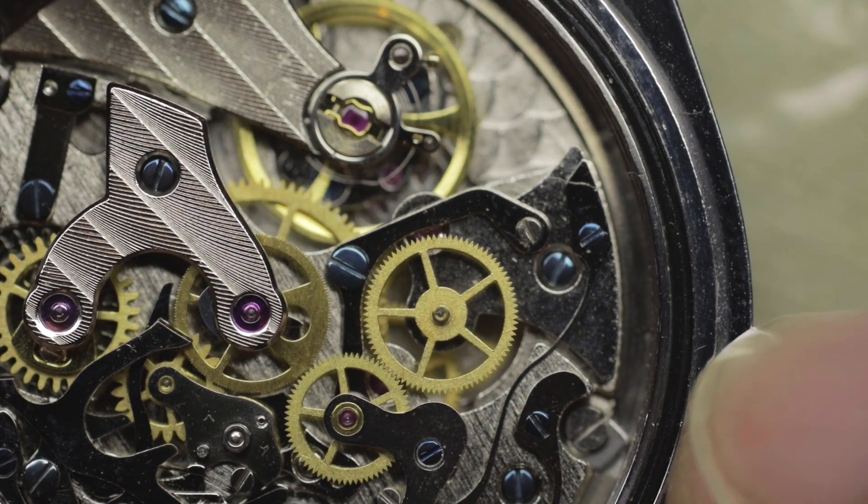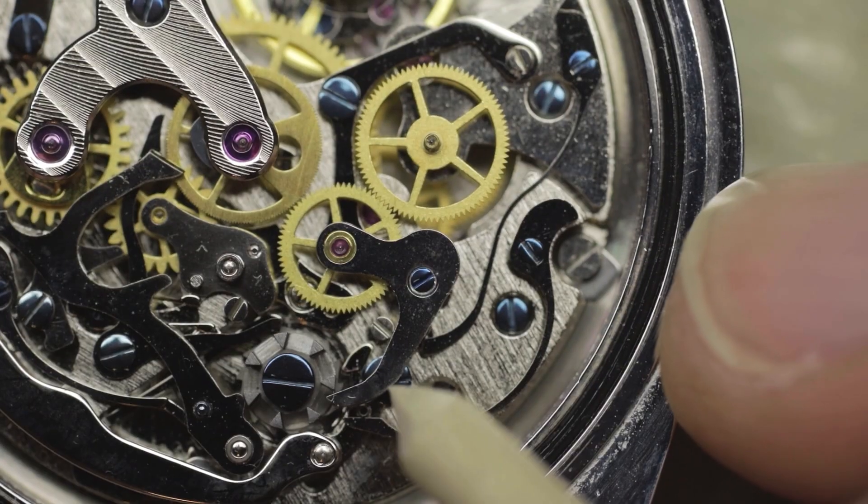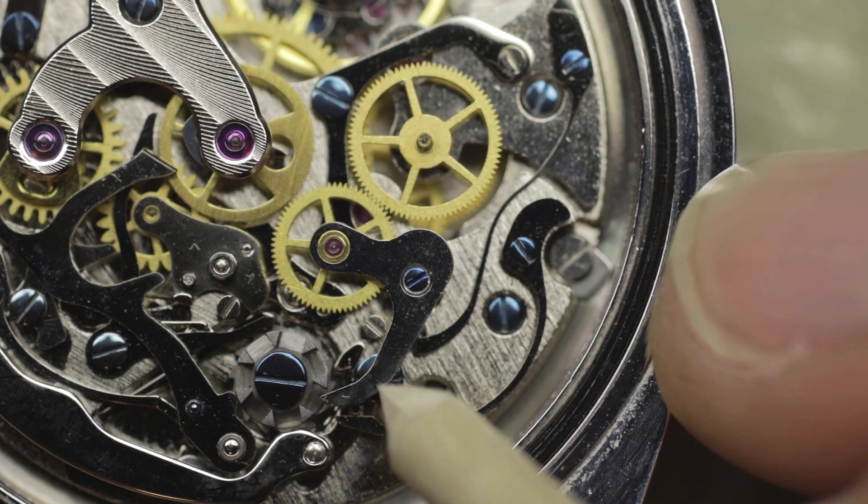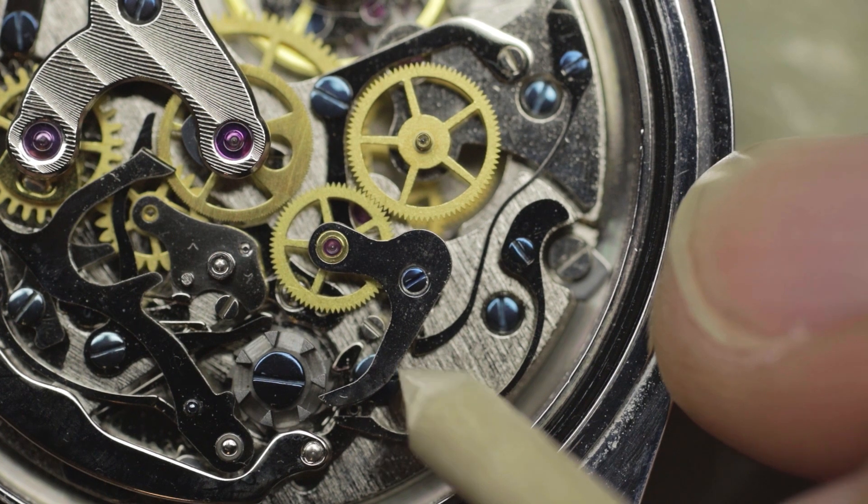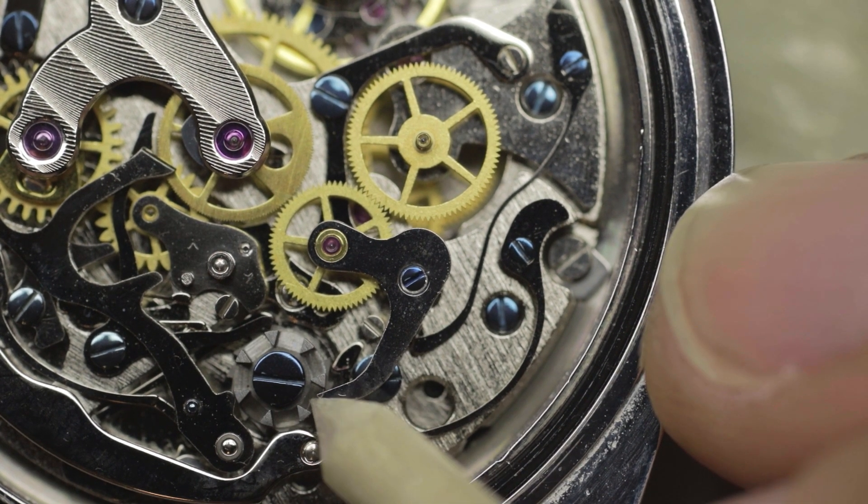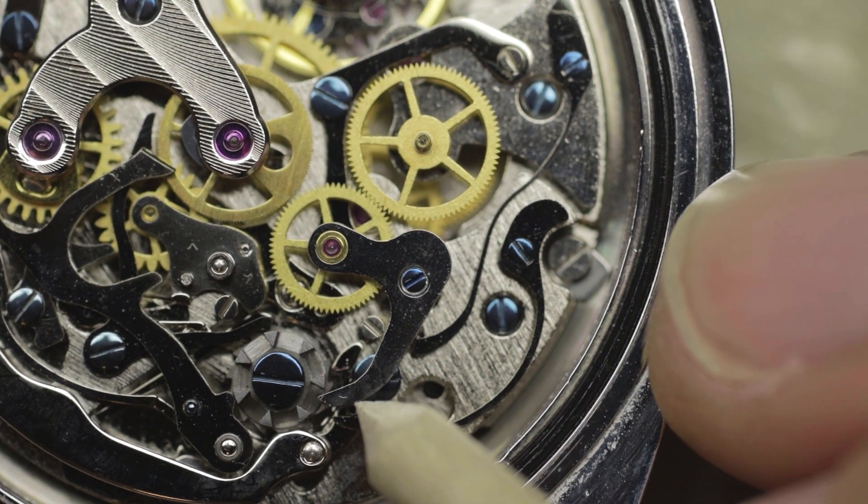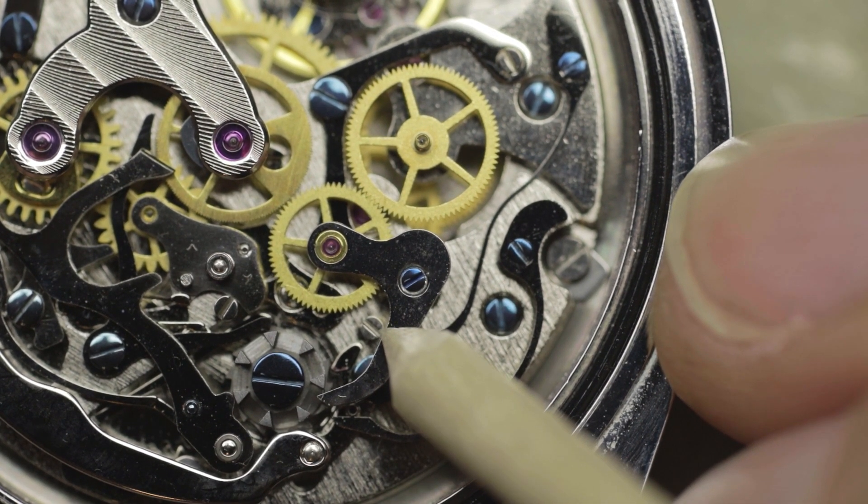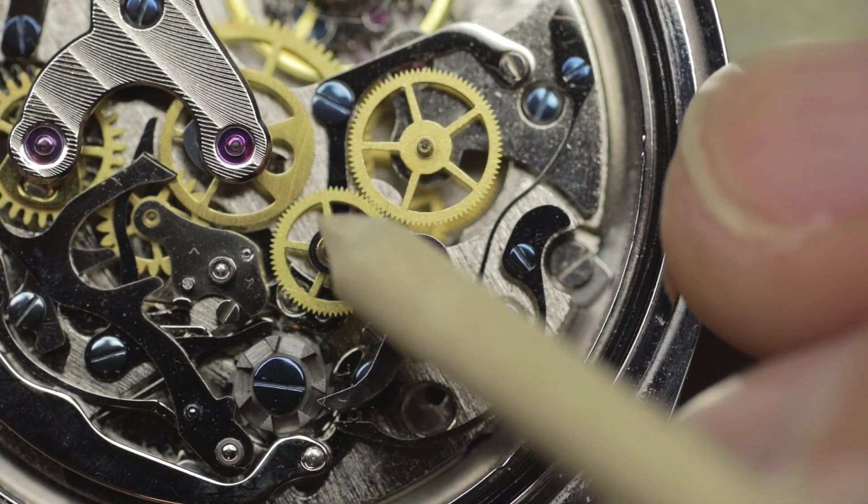Then you need to adjust this screw right down here because this is the one that actually stops it. This spring pushes this coupling mechanism up, this little bit here is where it acts against the pillar wheel and it drops into that slot to make contact, but this screw is the screw that stops it when it contacts the chronograph runner.